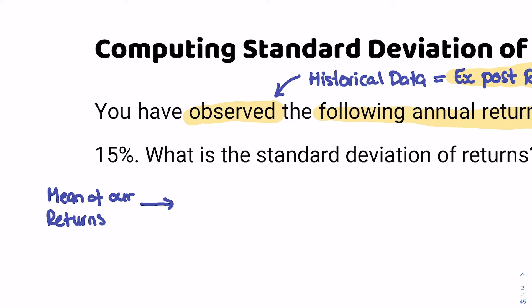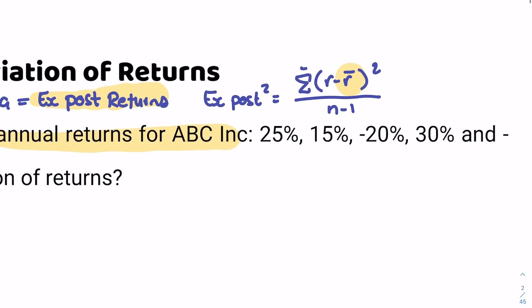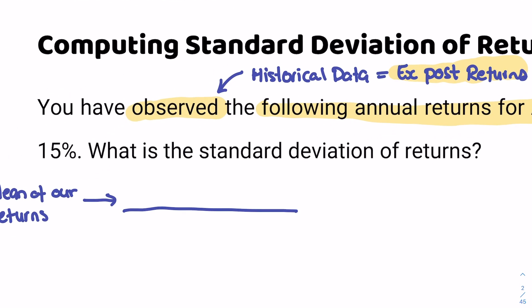The mean of our returns is calculated very straightforwardly. You're going to take all of your returns, add them up together, divide them by the total size of our sample, and you're going to find your mean. So we add up 25 + 15 - 20 + 30 - 15, all over 5. And that's going to give us 7%. That's amazing news because now we know exactly what our mean is.